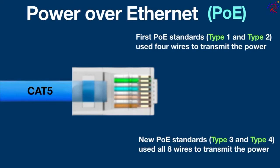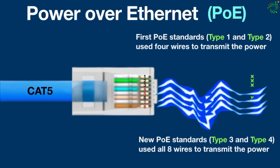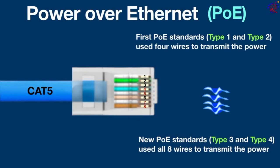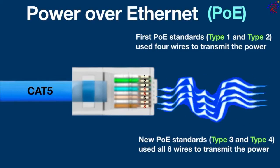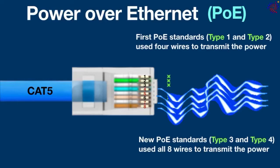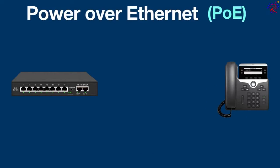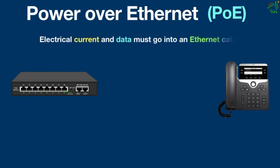Here we have a CAT5 cable with eight wires. If we attach an RJ45 connector to it, pins and wires 1, 2, 3, and 6 are used to transfer data, while pins and wires 4, 5, 7, and 8 are used to transfer power. Data and power transmissions do not interfere with one another because ethernet uses differential signaling.